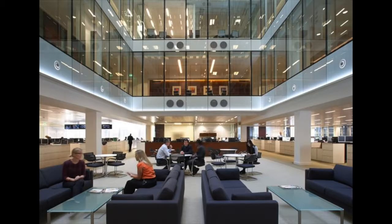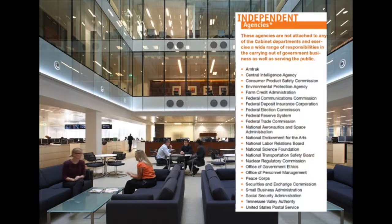Until the 1880s, nearly all the federal government did was done through its cabinet departments. But since then, Congress has created a large number of additional agencies called independent agencies, located outside the departments. Today, they number more than 150.